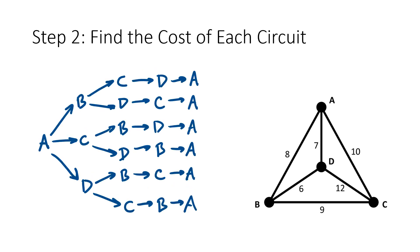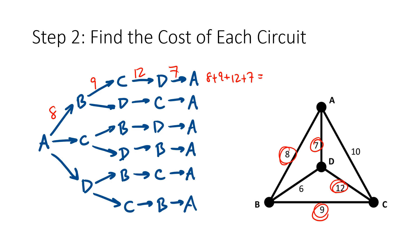The next step is to find the cost of each circuit. For the first circuit, A to B is 8, B to C is 9, C to D is 12, and D back to A is 7. So the total is 8 plus 9 plus 12 plus 7, which works out to 36. Then we keep doing the same thing to find the total cost of each of the circuits.